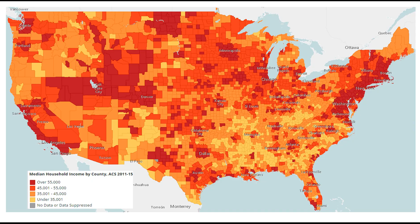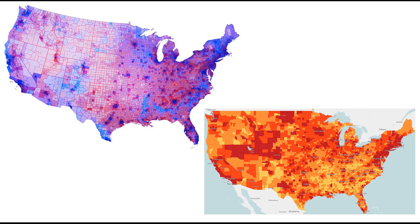Looking at median household income: the darker the red, the higher the median household income. The coasts — east and west — have high median household income but also vote Democrat. Lower-income areas along the Texas-Mexico border, Native American reservations, and African American communities also vote Democrat, so there seems to be some correlation with some crossover.